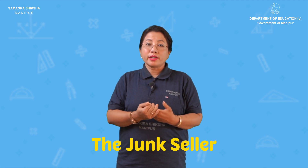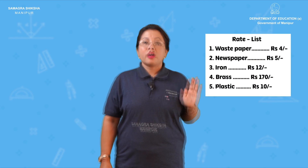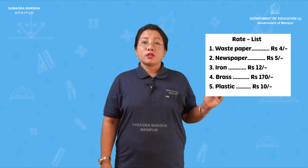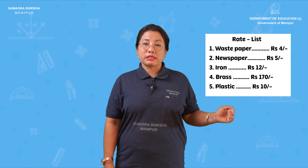What is the Junk Cellar? There is a Junk Cellar. What would you think about the Junk Cellar? If you look at it, the newspaper price is 4. The newspaper is 5. The iron is 12. The brass is 170. For plastic, it is 10 rupees per kg.